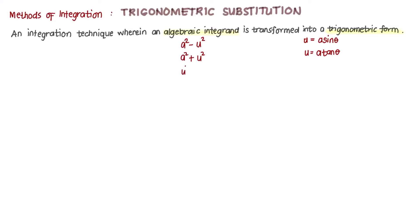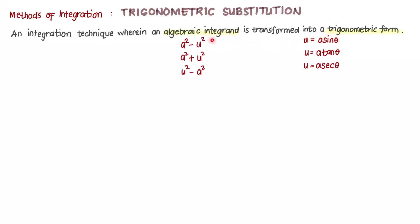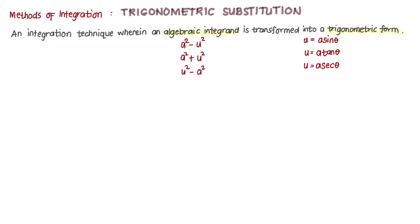And if we see u squared minus a squared in the given integrand, then we can let u be equal to a secant of theta. So from this algebraic form, it is transformed into a trigonometric form as long as we see these patterns and if the integration formulas are not applicable in the given integrand.